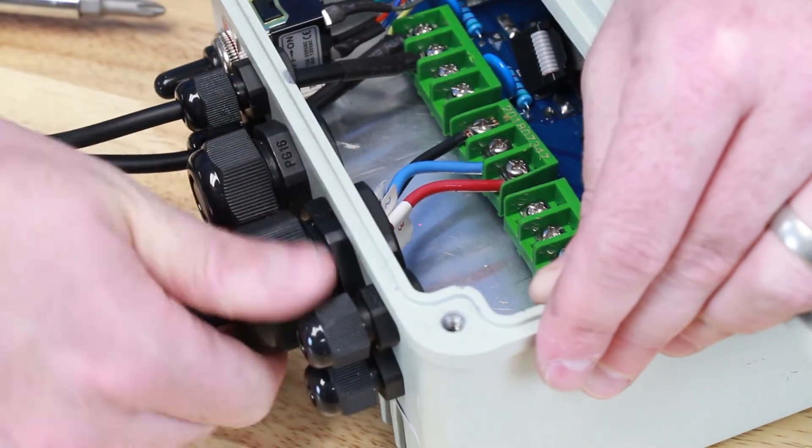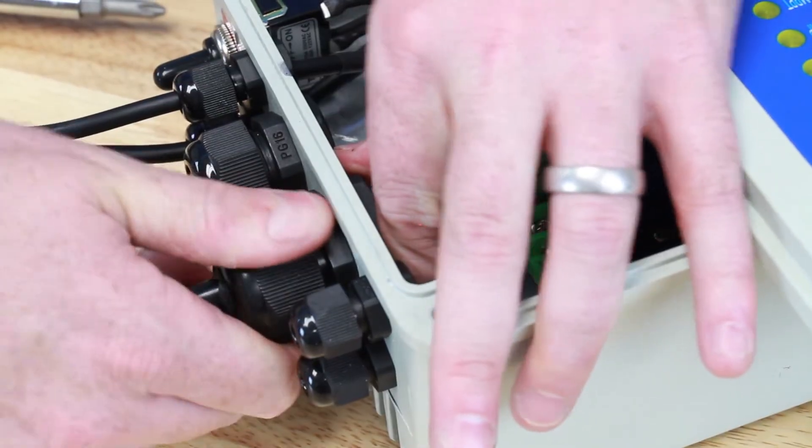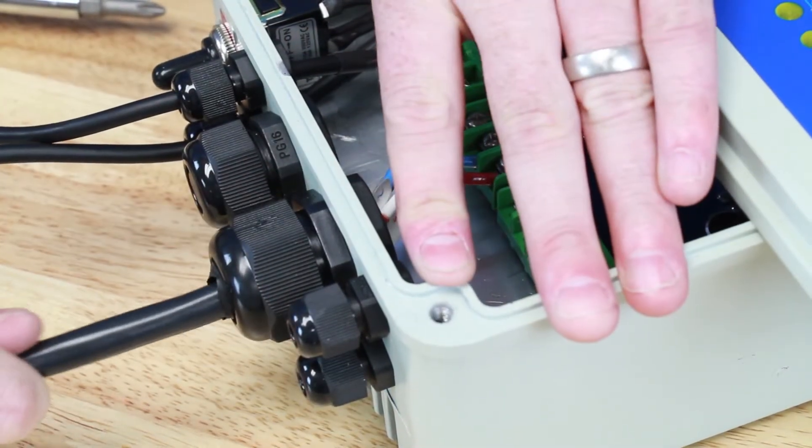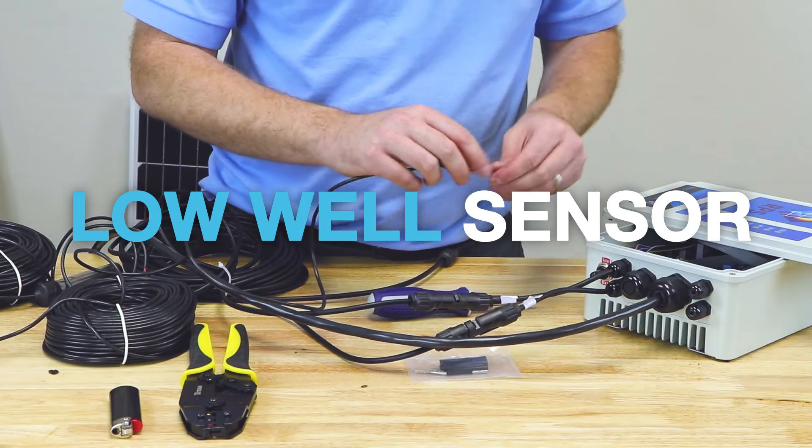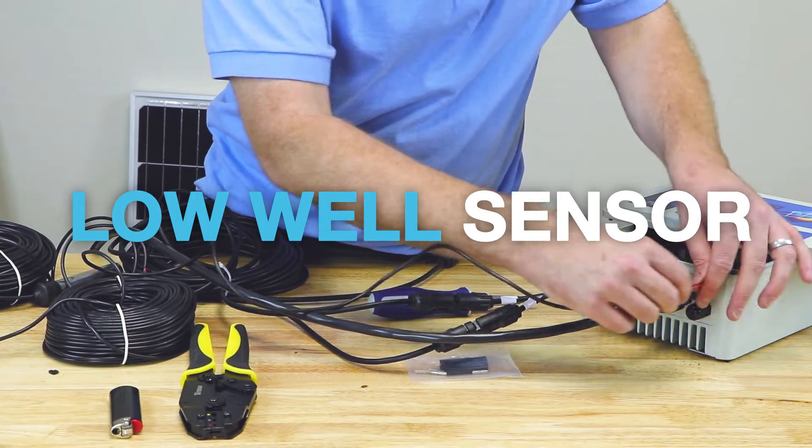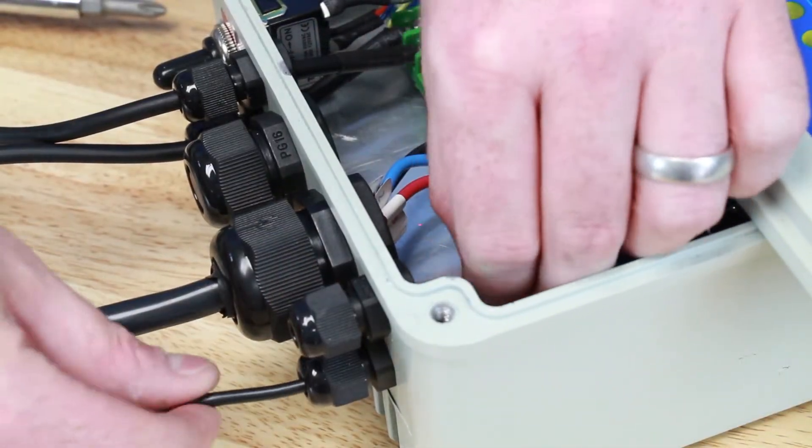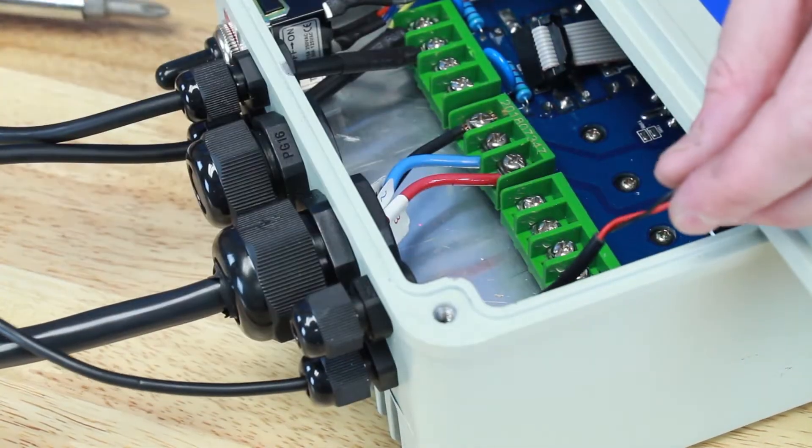Then we can tighten up this waterproof gland and it'll grab right under that wire, holding it in place. Next we have our low well sensor. Feed this up through the bottom grommet. We have both a red and a black wire.